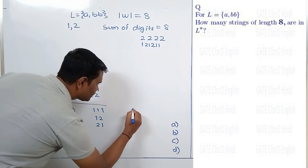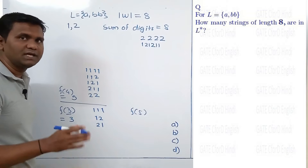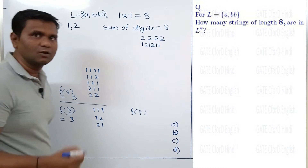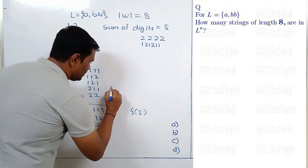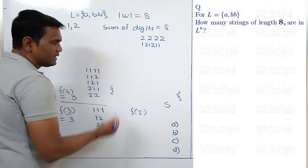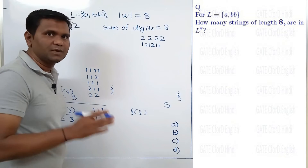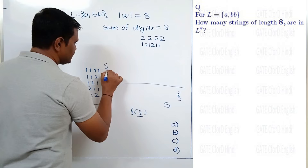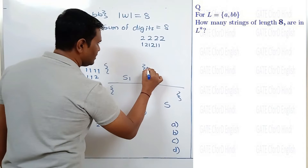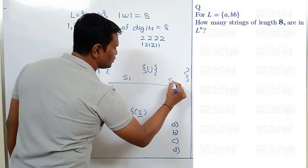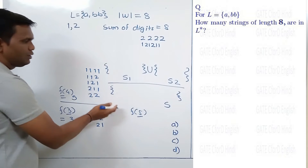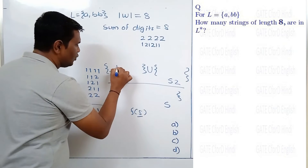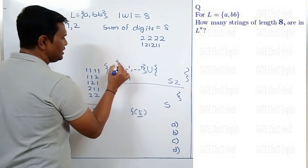Now let's see f(5): how many numbers are there which contain only digits 1 and 2 and have a sum of digits equal to 5? Let's say this is the set S. Set S contains all numbers which use digits 1 and 2 and have a sum of digits equal to 5. We will divide set S into two disjoint sets: S1 and S2. Set S1 contains all numbers whose last digit is 1, for example 2, 2, 1.